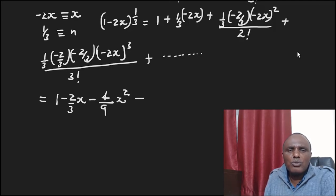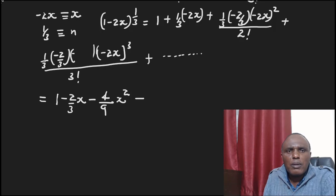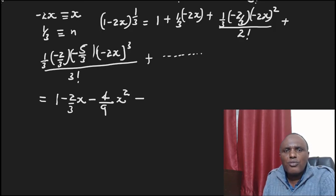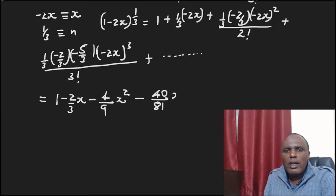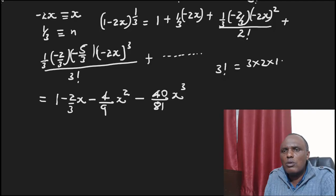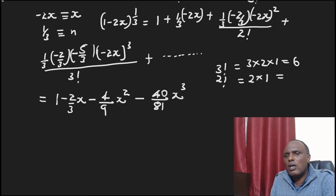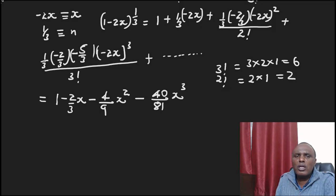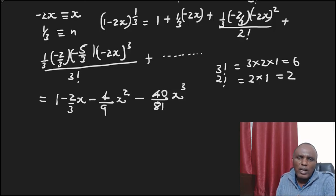For the fourth term, we have negative 5 over 3 multiplied by negative 5 over 3, and computing the full expression gives 40 over 81 x cubed. Note that 3 factorial equals 3 times 2 times 1, which is 6, and 2 factorial equals 2 times 1, which is 2. So the four terms are: 1, negative 2 over 3 x, 4 over 9 x squared, and negative 40 over 81 x cubed.